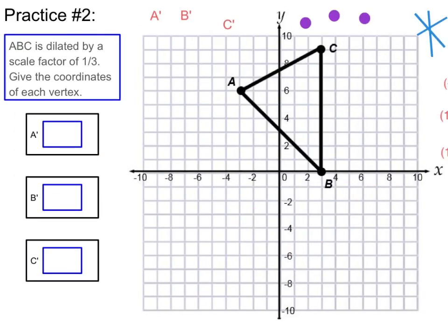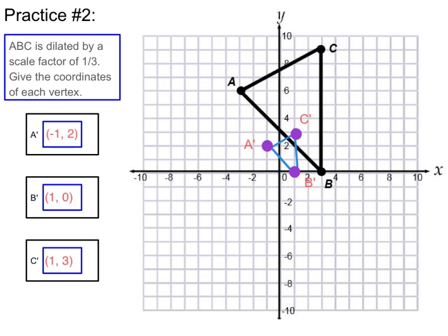Now take a look at practice number two. ABC is dilated by a scale factor of one-third. Give the coordinates of each vertex. Notice that you're multiplying by a scale factor that is less than one, so make sure you're being very careful with that. Go ahead and pause the video, then press play again to see if you are right. Your triangle should have gotten smaller and closer to the origin.